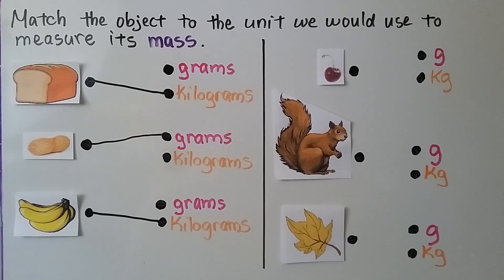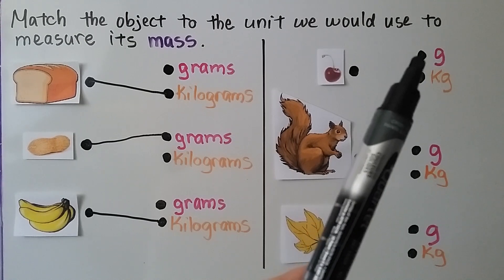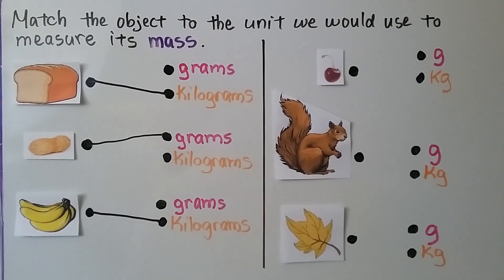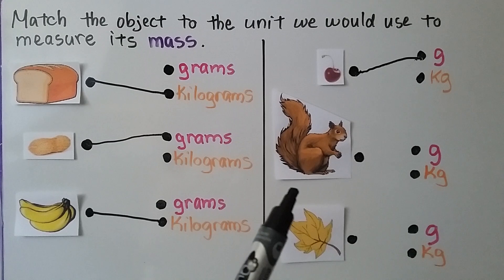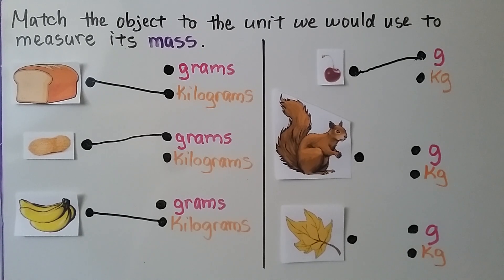The bunch of bananas has a lot more mass than a paper clip. What about a cherry? Would we measure its mass in grams or kilograms? Remember, the letter G is the abbreviation for gram, and kg is the abbreviation for kilogram. Comparing a cherry to a paper clip — if you said grams, you're right. What about a squirrel? If you said kilograms, you're right.